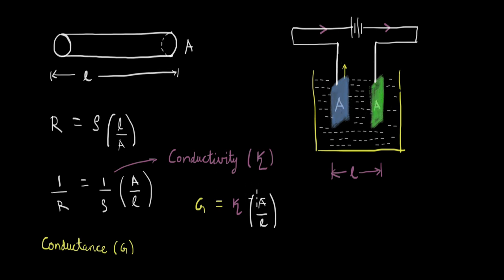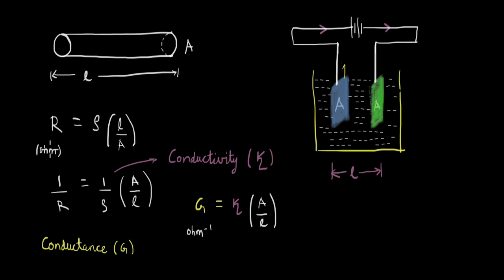The common area is A. Looking at units: conductance G is 1/resistance, and resistance is in ohms, so G is in ohm-inverse. Resistivity has units of ohm·meters (from length in meters and area in meter squared), so conductivity kappa — the inverse of resistivity — has units of ohm⁻¹·meter⁻¹. In SI units, ohm-inverse is called the Siemen (S), so conductance is in Siemens and conductivity is in Siemens per meter.